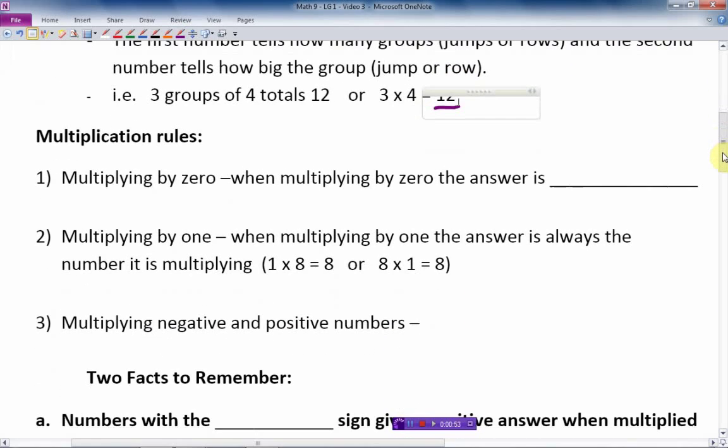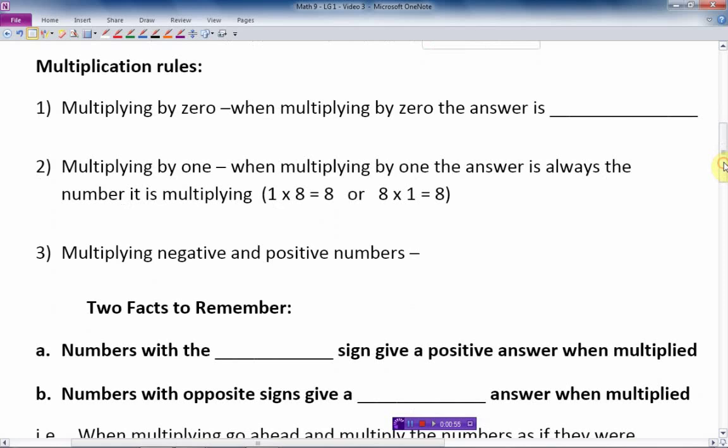So multiplication is the quick way of adding groups. And here's some rules. Multiplication rules: multiply by zero. When multiplying by zero, the answer is always 0. Okay, the answer is always 0. And that's pretty straightforward.